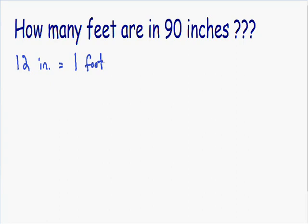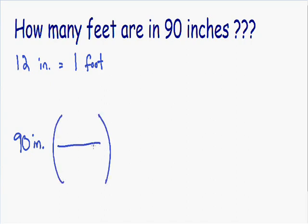So now we are ready to start our example. It says how many feet are in 90 inches, so we are converting 90 inches into feet. We are starting with 90 inches and converting that into feet. What I like to do is make a conversion tool, which is just a big parenthesis with a fraction in it. In the denominator of the conversion tool, we always put the same units that we are starting with. Since we are starting with inches, that means we have to have inches in our denominator.